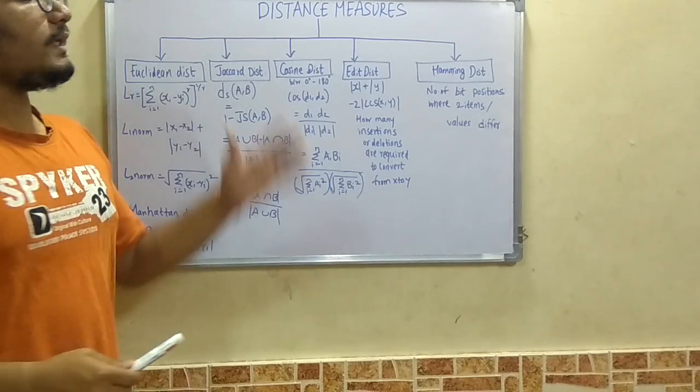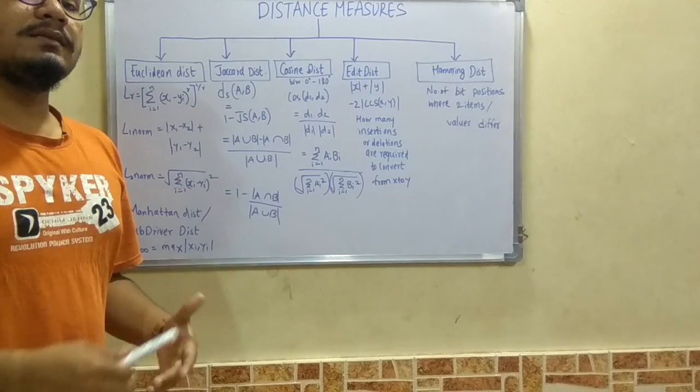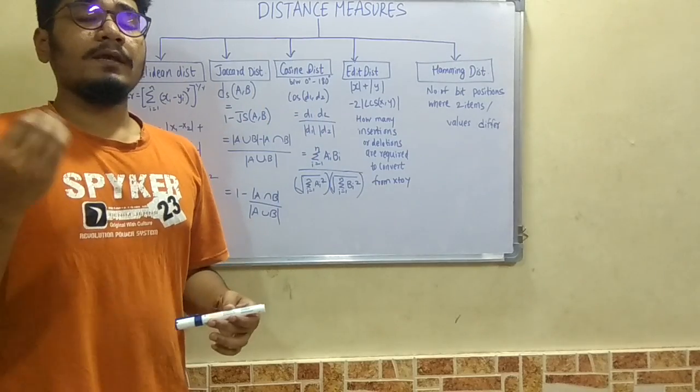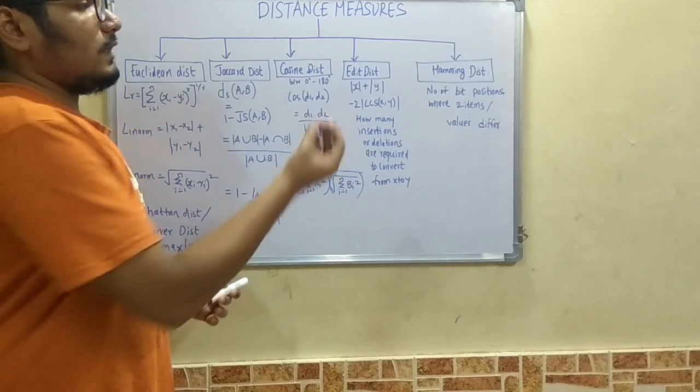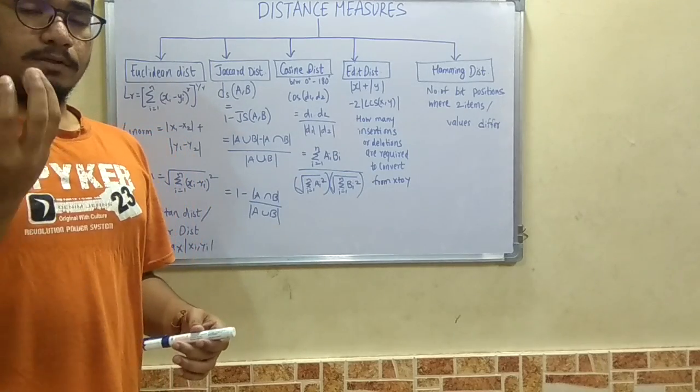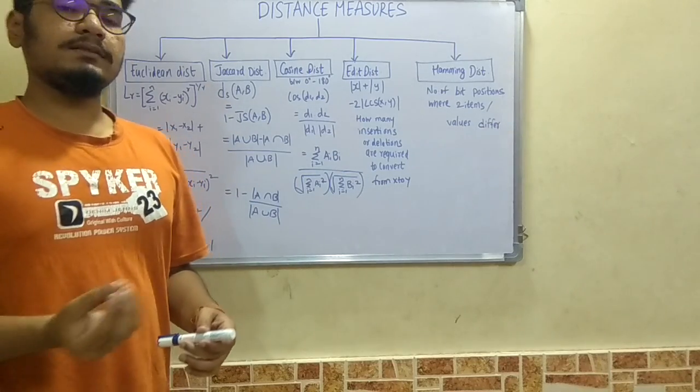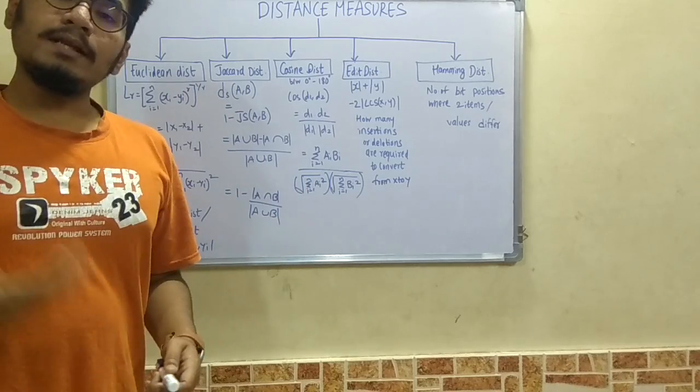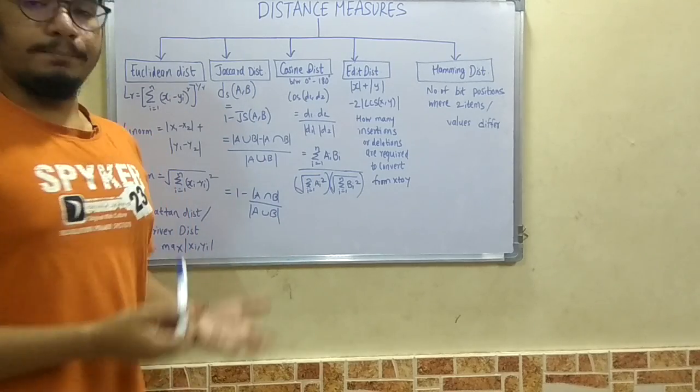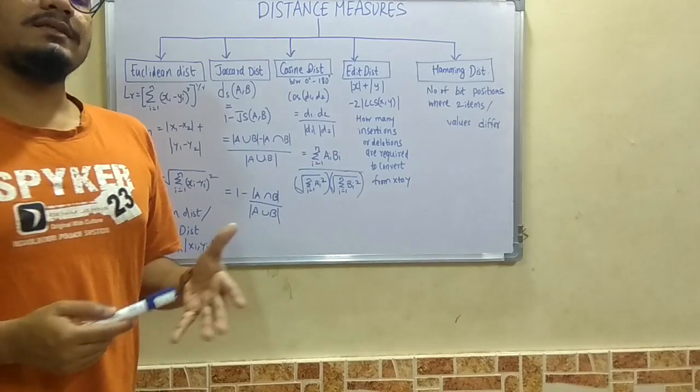Next we move on to Hamming distance. Hamming distance is the most widely used distance in network analysis, and in big data analysis it comes into the picture.